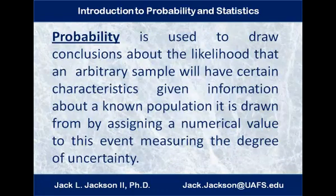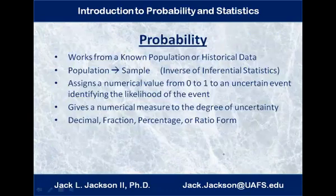Probability, on the other hand, is used to draw conclusions about the likelihood that an arbitrary sample will have certain characteristics given information about a known population it is drawn from, by assigning a numerical value to this event measuring the degree of uncertainty. So probability works from a known population or from historical data, and from that population we say something about the sample. We know the general rules that define the situation, we know the basic population, and then we ask: what's the probability that a certain event will happen? We assign probabilities to events — they are always a number between 0 and 1 inclusive — quantifying the likelihood of an event.